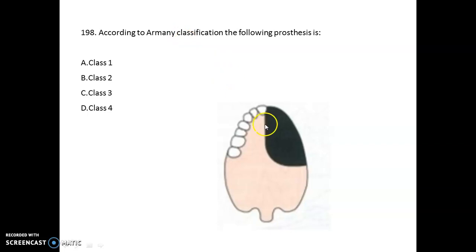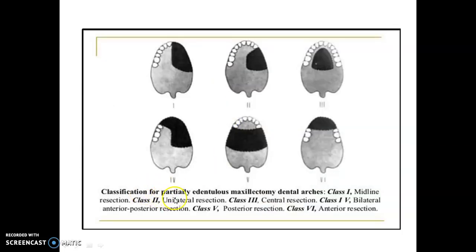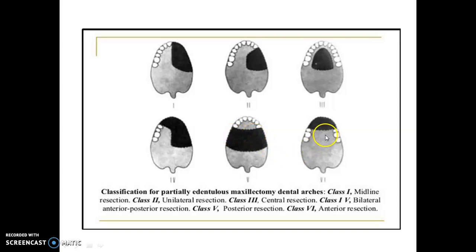According to the Armani classification, the process shown is Class 1. This is a classification for partially edentulous maxillectomy defects: Class 1 is midline resection, Class 2 is unilateral resection, Class 3 is central resection, Class 4 is bilateral anterior-posterior resection, Class 5 is posterior resection, and Class 6 is anterior resection. The Armani classification is very important for your examination.